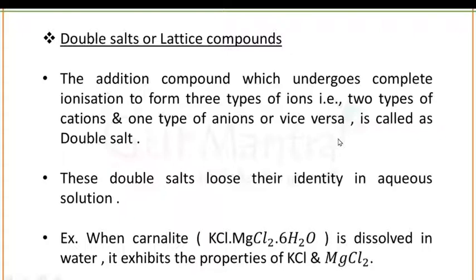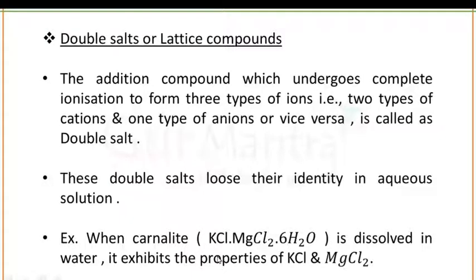A double salt is a salt that contains more than one cation and more than one anion. Examples of double salts include alums. These double salts lose their identity in aqueous solution, meaning they are ionizable in nature. For example, carnallite — having formula KCl·MgCl2·6H2O — when dissolved in water, exhibits the properties of both KCl and MgCl2.